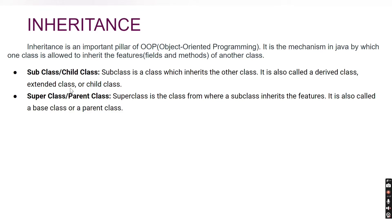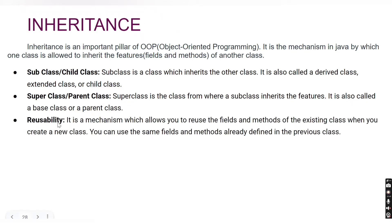In other terms, the subclass inherits features from the superclass. The third term is reusability — inheritance is a mechanism that allows you to reuse the fields and methods of an existing class when you create a new class. When creating a child class, you can extend or reuse the properties of the parent class, using the same fields and methods already defined in the parent class or superclass.